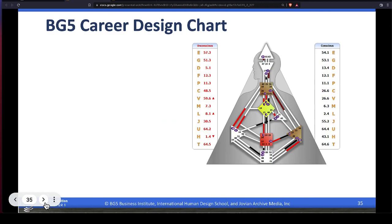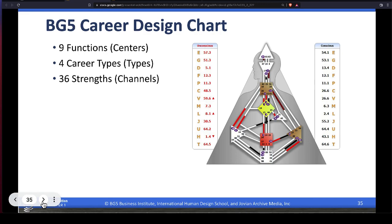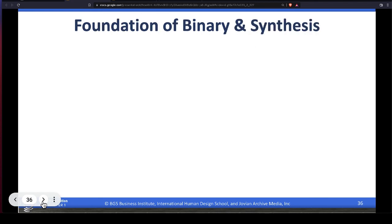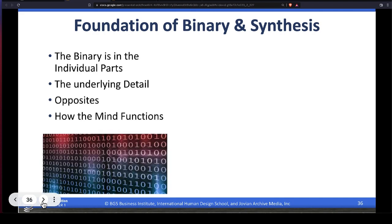So each of you, with your career design chart having nine functions or centers, four different career types, 36 strengths or channels, 64 traits or gates, each of those traits having six potential qualities for 384 variations, i.e. the lines. All of that makes for an utterly unique foundation of the synthesis of what you are. It's a synthesis of the binary. There's a binary there in these individual parts. The parts that are synthesized to create a whole.